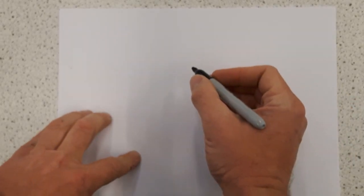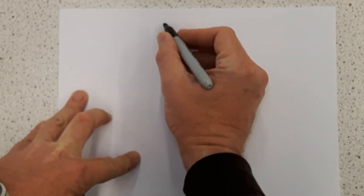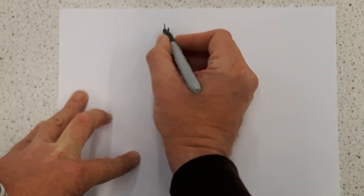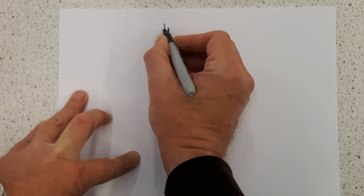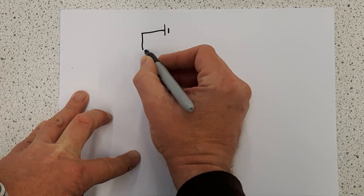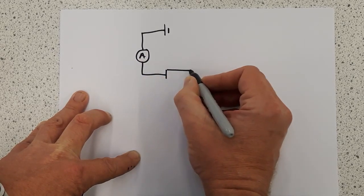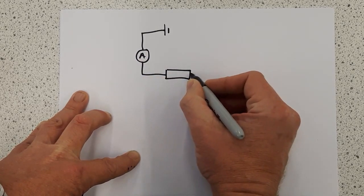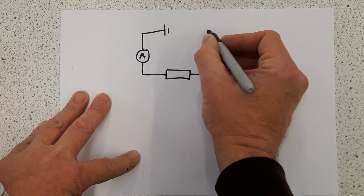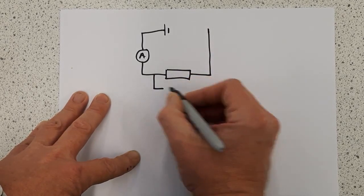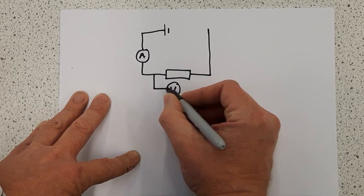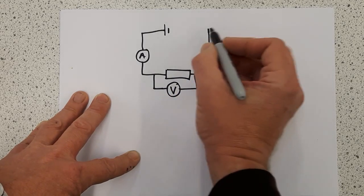And if we're going to investigate this properly, we would use a circuit that looks a bit like this, an ammeter in series, and we're just going to use a fixed resistor, which is represented by the block, and we're going to measure the voltage across the resistance.